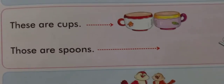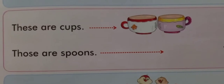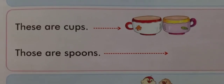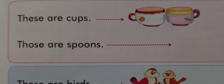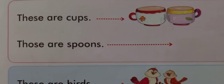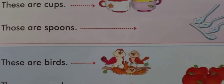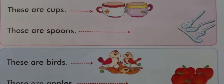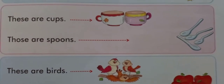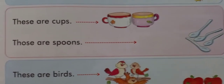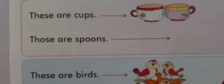Beautiful birds are there — look at the picture, children. These are birds, because they are very near. Those are apples — they are so far, so you will use 'those.'